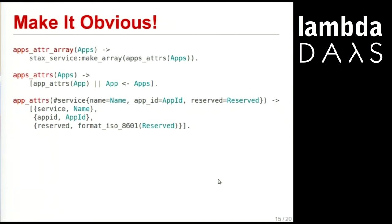It's a single-line implementation, so it's easy to answer the question: what does this thing do? You don't have to read the documentation — just read the single line. 'stack_service:make_array' — that's consistent with a list of apps adder, a function of apps. Then apps: there's my list comprehension, but it doesn't look scary. I'm enumerating through apps; for every app, create an entry called app_adders. Apps_adder is a three-line function breaking apart name, ID, reserved — now it's creating an app adder.